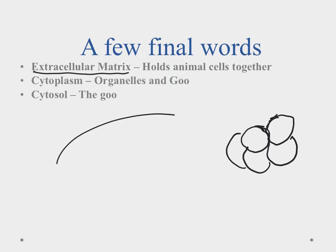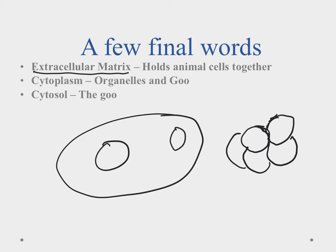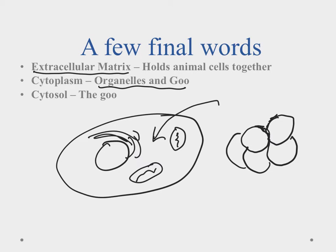Inside the cell, we have our nucleus, mitochondria, endoplasmic reticulum, and all that good stuff we'll be talking about — all the organelles. The organelles and the goo together is what we call the cytoplasm, so cytoplasm refers to everything inside of the cell membrane. The actual goo that everything is suspended in is called the cytosol. Make sure you understand the difference between those two terms.